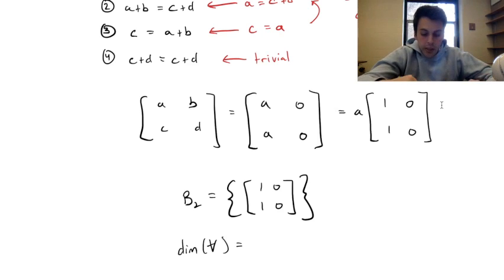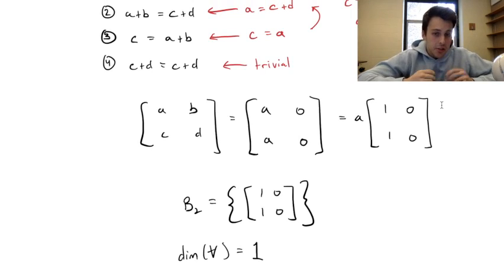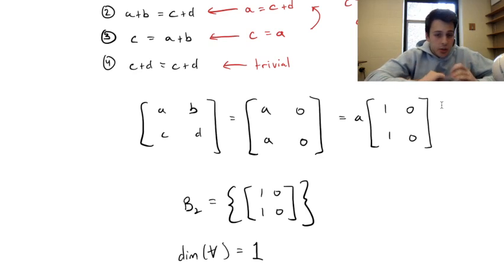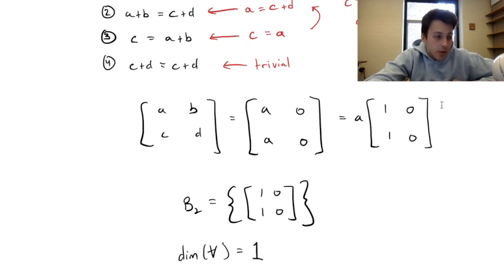That's pretty much it. For the subspace test, the same three rules apply. For finding the basis, you're generalizing using the equation given in your subspace definition and breaking it into a linear combination of terms that span the entire vector space. Hope this video was helpful.